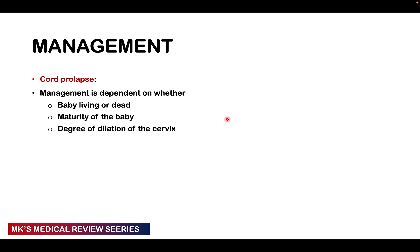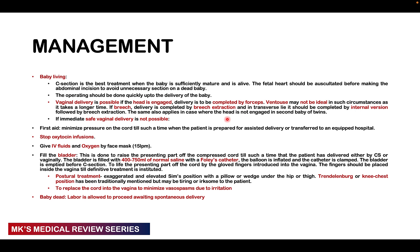Management depends on: whether the baby is alive or dead, the maturity of the baby, and the degree of cervical dilatation. If the baby is alive and sufficiently mature, cesarean section is the best option. The fetal heart should be auscultated before making the abdominal incision to avoid performing a C-section for a dead baby. If vaginal delivery is possible and the head is engaged, forceps delivery is preferred; vacuum delivery is not ideal as it may take longer. For breech, perform breech extraction; for transverse lie, perform internal version followed by breech extraction.